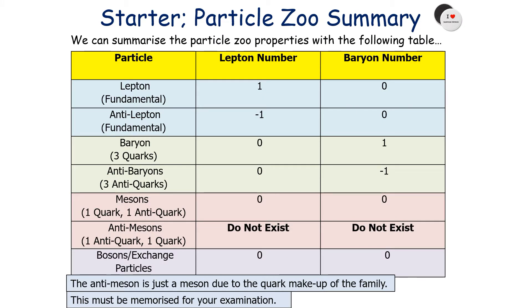We can summarise the particle zoo properties with the following table. Leptons, which are fundamental, have a lepton number of 1 and a baryon number of 0. An antilepton, also fundamental, has a lepton number of minus 1 and a baryon number of 0. A baryon has 3 quarks, with a lepton number of 0 and a baryon number of 1. An antibaryon, which is 3 antiquarks, has a lepton number of 0 and a baryon number of minus 1. A meson, which is 1 quark and 1 antiquark, has a lepton and baryon number of 0. Anti-mesons do not exist, as they're just mesons. Bosons or exchange particles also have a lepton number and baryon number of 0. You've got to memorise these key facts for your examination.